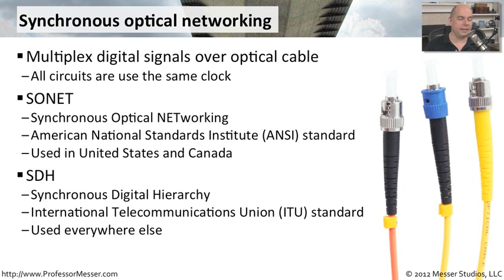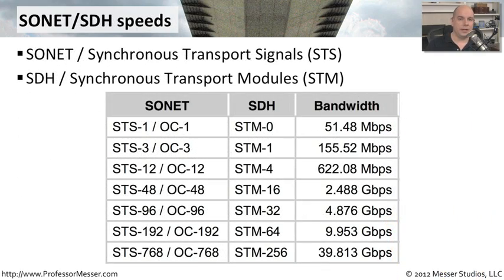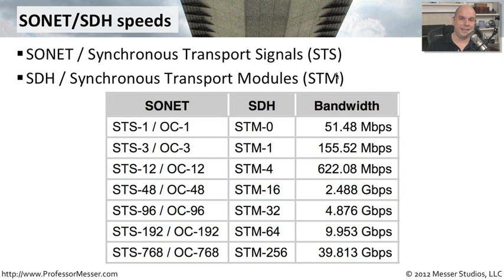Although we use the terms SONET and SDH to refer to two different standards, they are very, very similar and we almost refer to them identically. However, they have different ways of calculating throughputs and bandwidth. For SONET, you have something called a Synchronous Transport Signal, or STS. In SDH, there is the Synchronous Transport Module, abbreviated as STM. You'll see these abbreviations when talking about speeds and bandwidth over these types of connections.